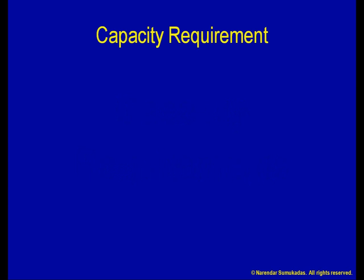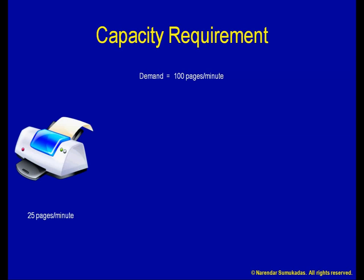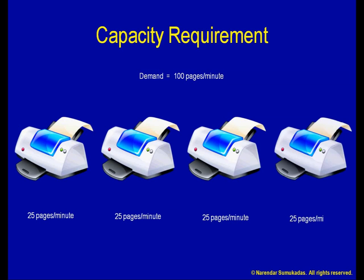If I have a process that produces the same thing over and over, I can figure out the required capacity by dividing my total demand by the capacity of each unit. For example, if I am running an office with a printing demand of 100 pages per minute, and each printer has a capacity of 25 pages per minute, I need to install 4 printers to meet my demand.